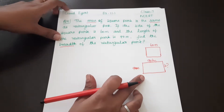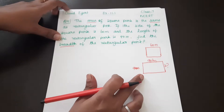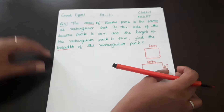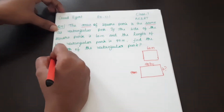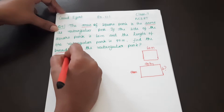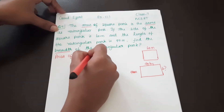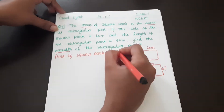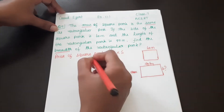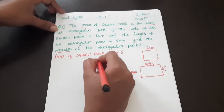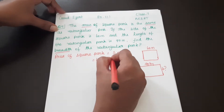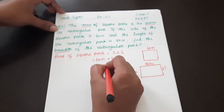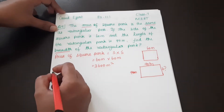So first, area of the square park. The area of a square is s into s. So s is 60 meters into 60 meters, which gives 3600 m².